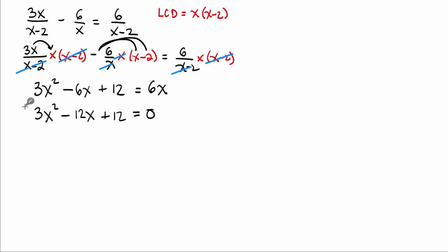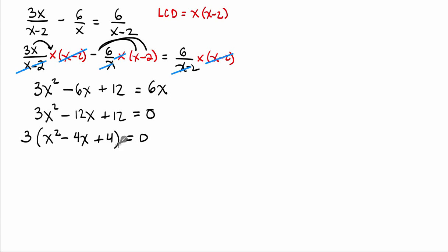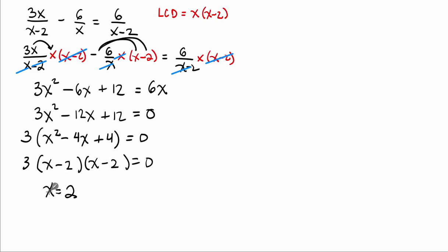Factoring is a good choice here. It'll be easier once you recognize that each of the three terms — 3x squared, minus 12x, and plus 12 — share a common factor of 3. We take out 3 and write: 3 times (x squared minus 4x plus 4) equals 0. Factoring the quadratic gives (x minus 2)(x minus 2), yielding only one possible answer: x equals 2.